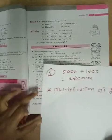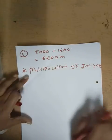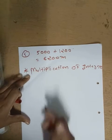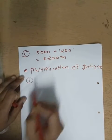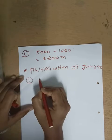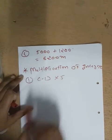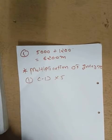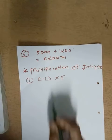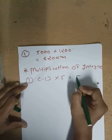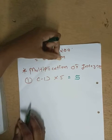Multiplication of integers. First example: minus one multiply by five. First of all, do simple multiplication. Five ones are five. Now, number one is minus and five is positive.